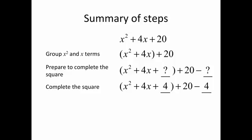We figure that we're going to need four units in order to complete the square. We know that because we take half of the 4x coefficient — we split the x's in half. So half of 4 is 2, and 2 squared is 4. So we add 4 here, and then we take them away from the units that we had.